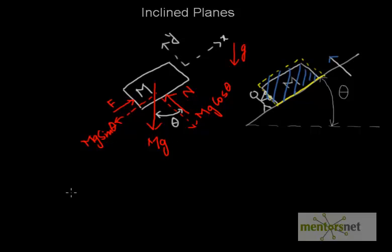So here we come to know that n minus mg cos theta is equal to zero, which gives n is equal to mg cos theta.